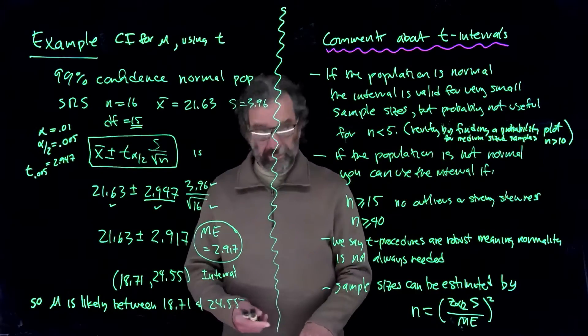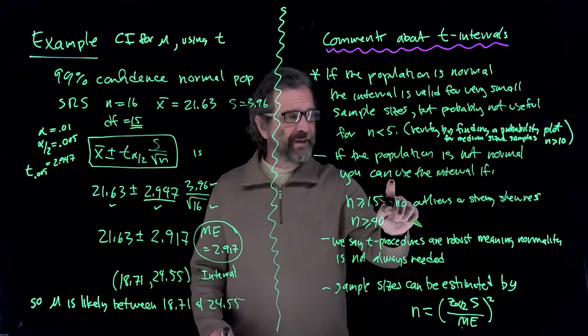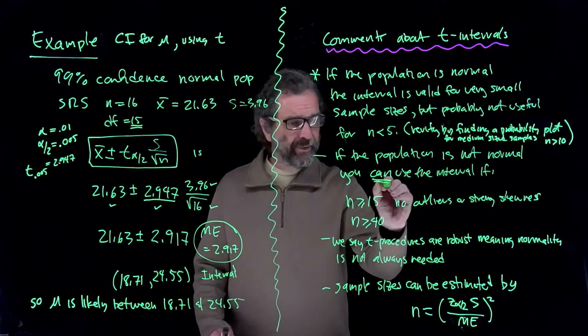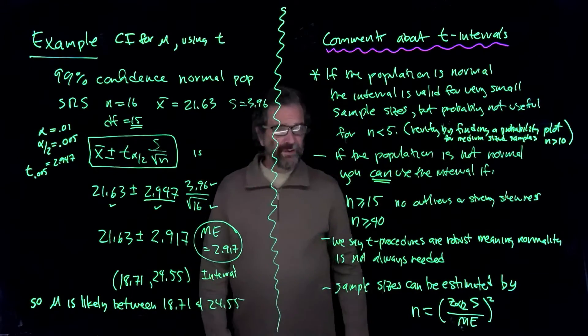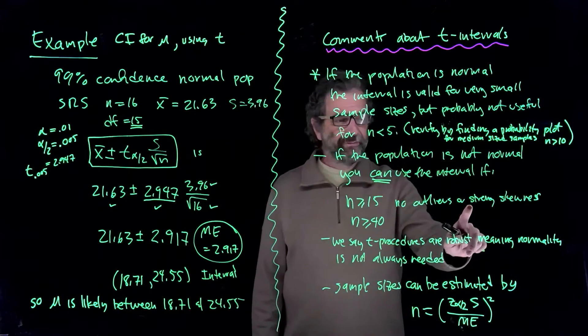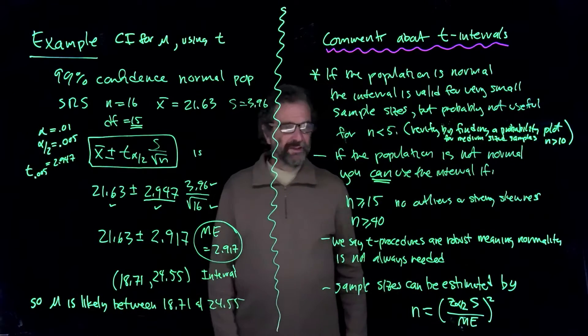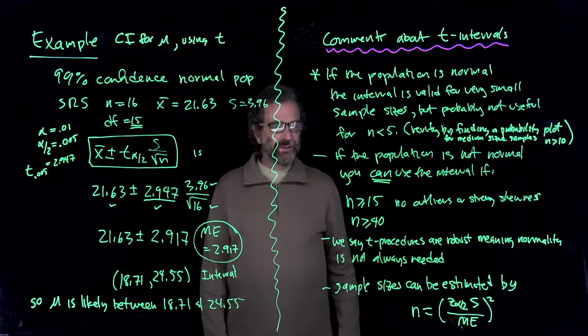And then if the population is not normal, you can use the interval again with some other conditions. So if n is at least 15, no outliers or strong skewness. It doesn't have to be symmetric. It doesn't have to look normal. Just no outliers or strong skewness.